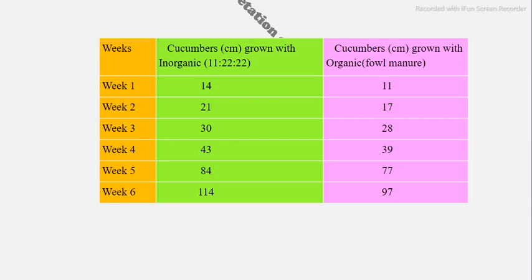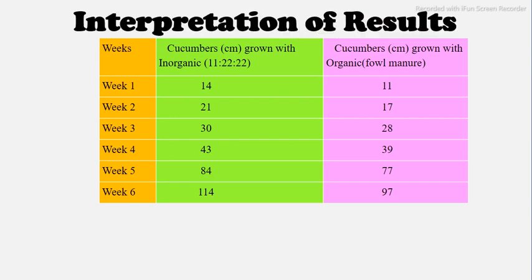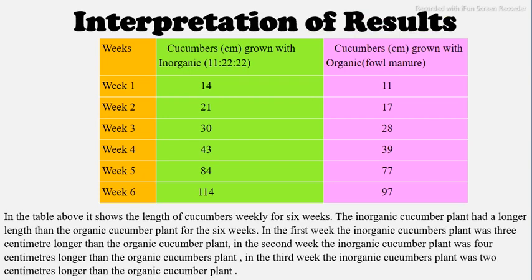Now you move on to presentation and interpretation of data. Here you have three columns again. For week one, cucumbers grown with inorganic fertilizer had a stem of 14 centimeters long. The stem of the cucumber grown with organic or fowl manure is 11 centimeters. You are going to analyze by taking away 11 from 14, giving you three centimeters. So you indicate that those cucumbers grown with inorganic fertilizer in week one had stems three centimeters longer than those grown with organic. You do that from weeks one to six.